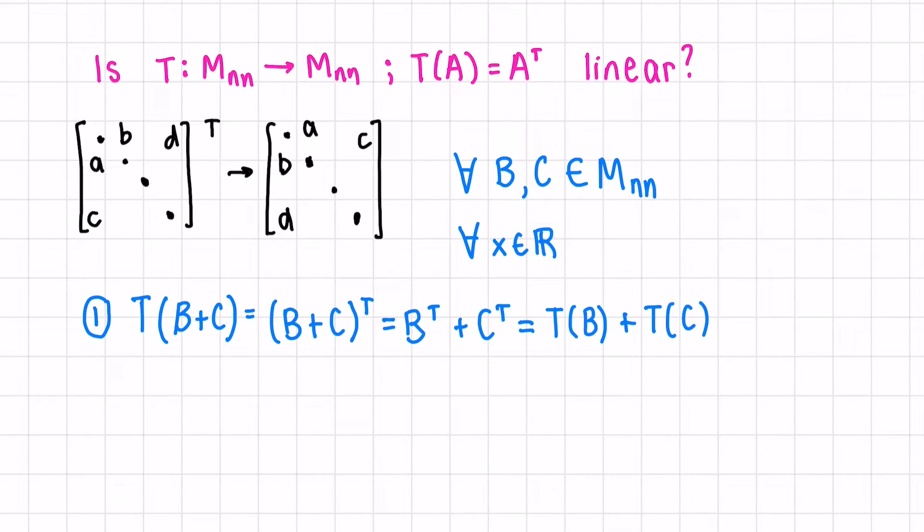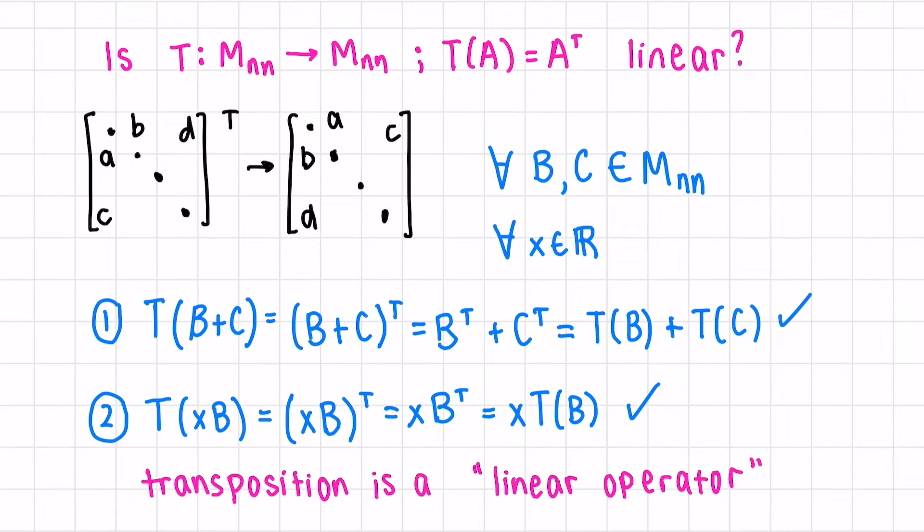We've now shown that our transformation is closed under addition. For scalar multiplication, let's take the transformation of X times our matrix B. What would this equal? X B transposed. Again, if you know the properties of transposition, we know we can remove the X and then apply the transposition of B. This is equivalent. If you think about it logically, if you multiply a whole matrix every single term by X and then you flip the rows and columns, that's the same as first flipping the rows and columns and then multiplying by X. We can rewrite this as X times the transformation of B. And we've now shown our transformation is closed under scalar multiplication. We can call transposition a linear operator because the domain where we're starting and the codomain where we end up is the same space.